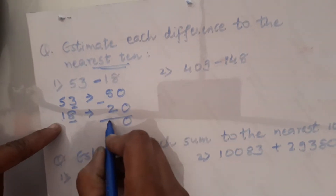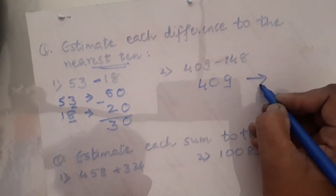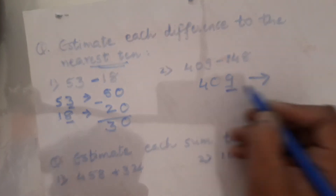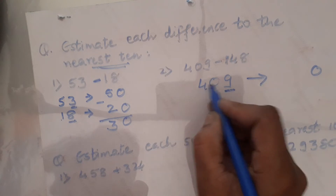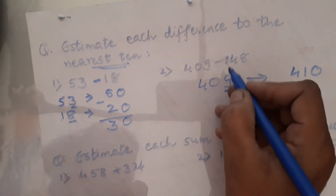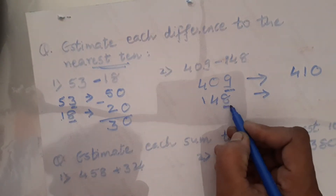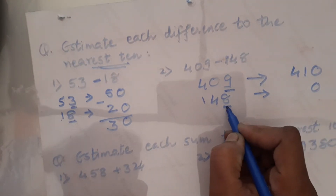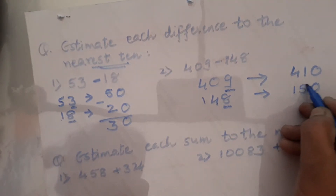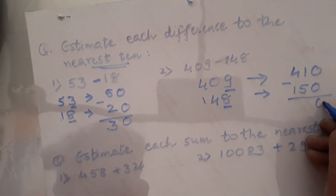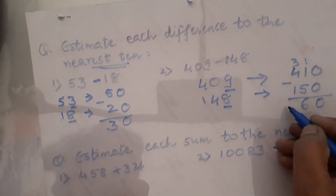50 minus 20 equals 30. For 409 rounded to the nearest tens: 9 is greater than 5, so 40 plus 1 is 41. Then 148 rounded to the nearest tens: 8 is greater than 5, so 14 plus 1 is 15. Now subtract: 410 minus 150 — you get 11 minus 5 is 6, and 3 minus 1 is 2, giving 260.